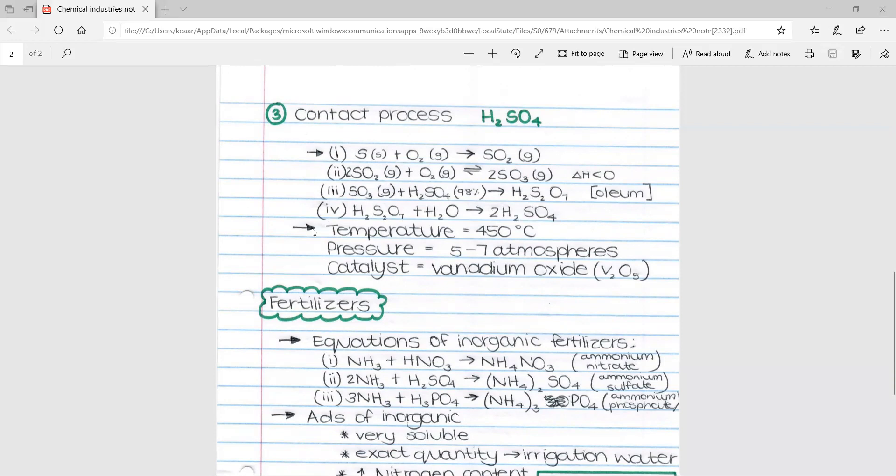Some characteristics of this process. We have a temperature of 450 degrees Celsius. The pressure is between 5 and 7 atmospheres. And we use a catalyst of V2O5, which is vanadium oxide.